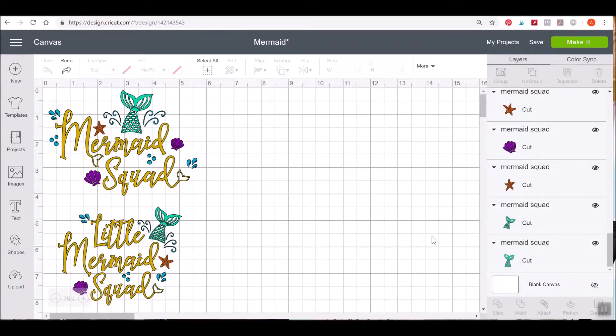In this video, we're going to be working on creating tumblers with permanent adhesive vinyl. I have these files linked below for you, and I'm using these to create a mommy-daughter water bottle set for me and my daughter. It just says Mermaid Squad and Little Mermaid Squad.